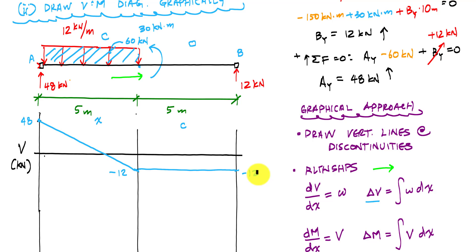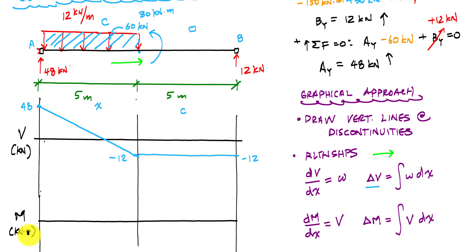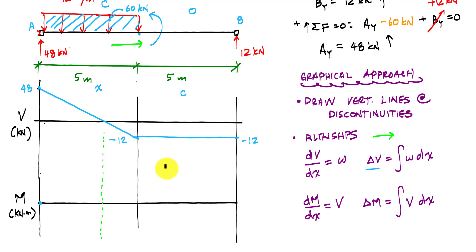My moment diagram has units of kilonewton-meters. At point A, I don't have a concentrated moment, so my moment diagram starts at zero. An important thing when drawing the moment diagram is to include a vertical line wherever the shear crosses zero — just like in calculus, when the shear crosses zero you have a local maximum, minimum, or critical point. The change in moment equals the area under the shear diagram.